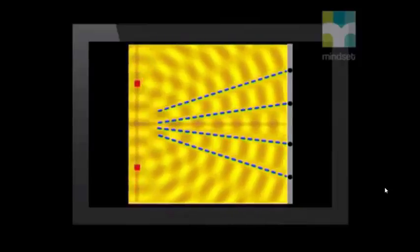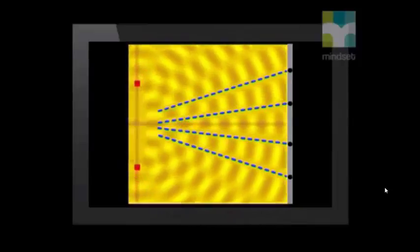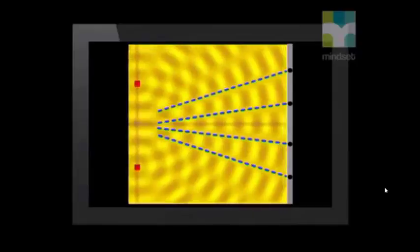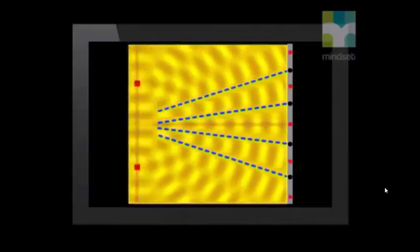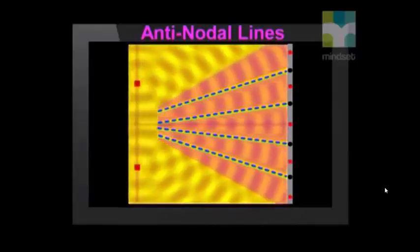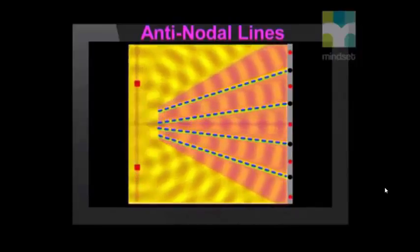At other places, crests meet crests or troughs meet troughs and they double the amplitude. These places line up and we find these antinodal lines where the amplitude is a maximum.